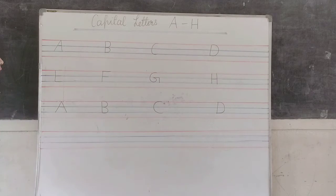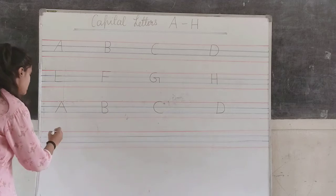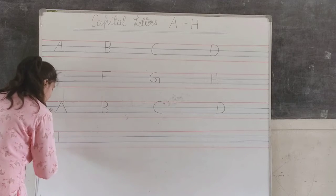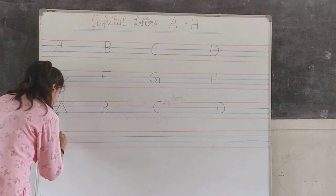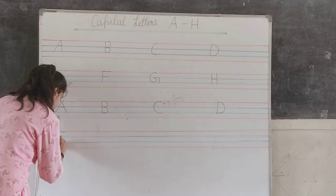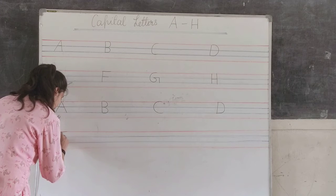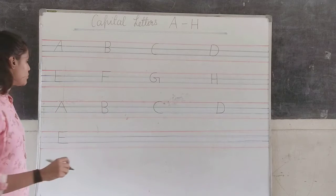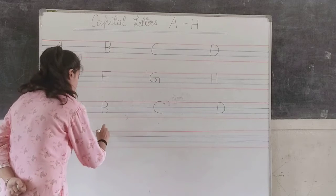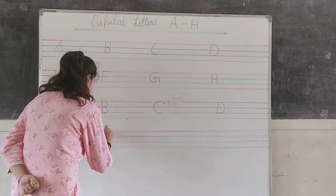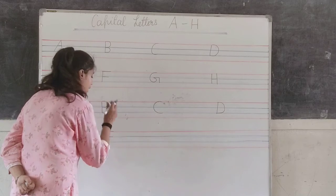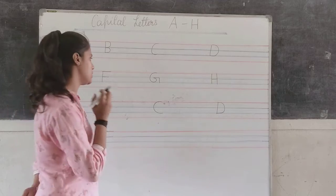E for elephant. How to write E for elephant? One standing line, one sleeping line, another sleeping line, and another sleeping line. F for fish: one standing line, one sleeping line, and another sleeping line.